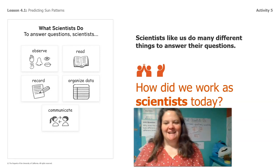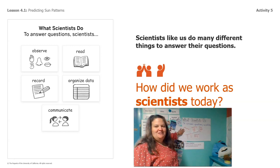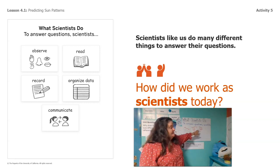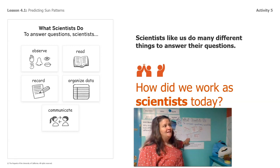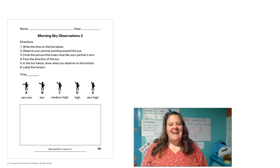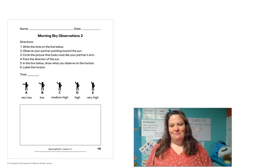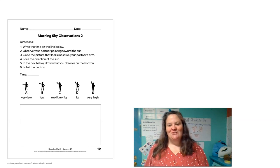How did we work as scientists today? Let's look at our table. Did we make observations? Yes, we did. Did we record? Yes, we recorded our data. Did we organize that data? Yes, we did — we put it on our sky mural. That's the end of today's lesson. If you can, I'd like you to try to make some of your own sky observations today, and if you can make them at the same time as your last observations, that's even better. If you have the notebook pages, make observations there; if not, a plain piece of paper works fine too. Then you can add it to your own sky mural.